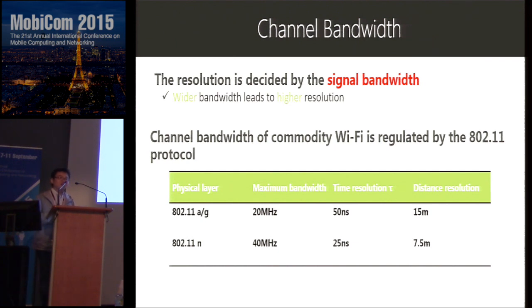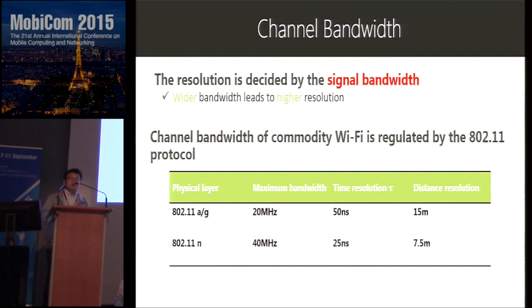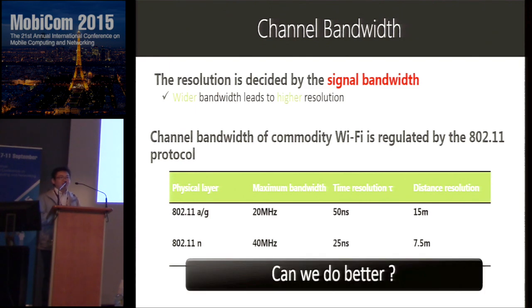However, this is not always possible with commodity Wi-Fi, because the channel bandwidth is regulated by the protocol and cannot be changed freely. What makes things worse is that the resolution of the power delay profile from commodity Wi-Fi is far from enough. In this paper we ask: can we do better than this without changing the protocol and without changing the existing Wi-Fi infrastructure?